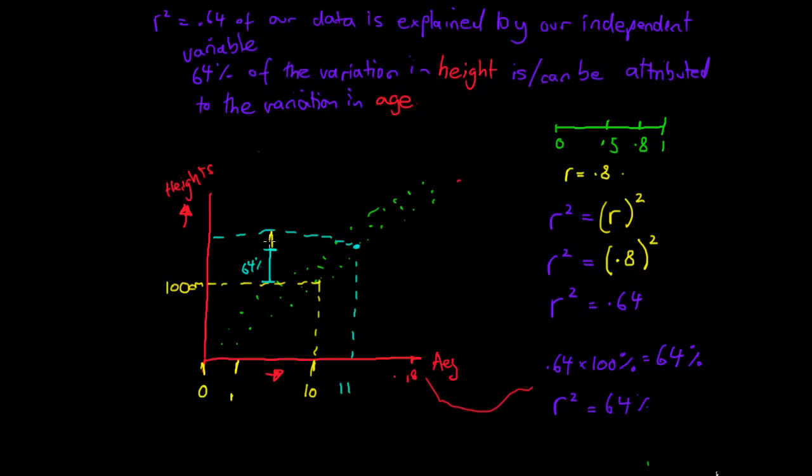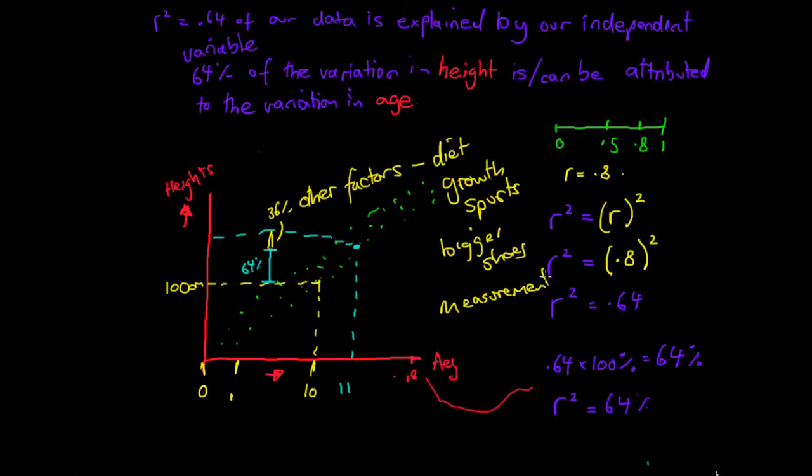And this other, what would be 36%, would be explained by other factors. And these might be things such as diet, or growth spurts, or, I don't know, you got bigger shoes, so they made you taller. Or there was measurement error. But our r squared basically tells us what percentage of a change in the x variable led to a change in the y variable. And we'll always write it in this form here. 64% or x percentage of the variation in height can be attributed to the variation in age. And then usually we'll say 36%, which will be the remainder, is attributed to other factors.